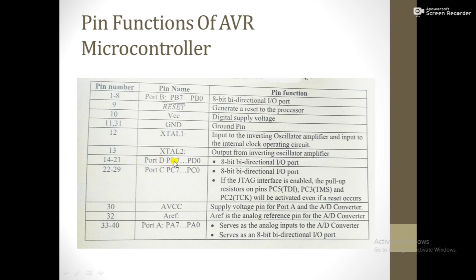Pins 14 to 21 are Port D7 to Port D0 — an 8-bit bi-directional input/output port. Pins 22 to 29, PC7 to PC0, form another 8-bit bi-directional input/output port, and if the JTAG interface is enabled these pins serve that function. AVCC is the supply voltage pin for Port A and the A-to-D converter. AREF at pin 32 is the analog reference pin for the A-to-D converter. Pins for Port A7 to Port A0 serve as analog inputs to the A-to-D converter and also as an 8-bit bi-directional input/output port.